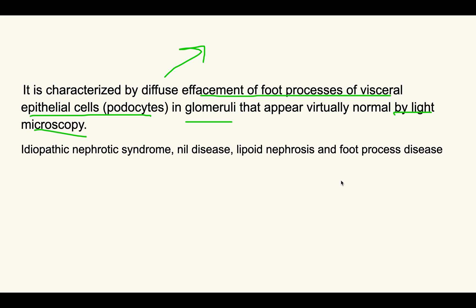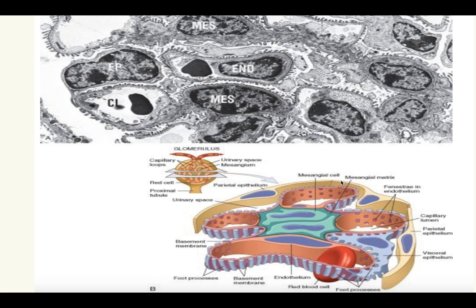There are some other names by which minimal change disease is known. It is also called idiopathic nephrotic syndrome because the actual pathogenesis is not clearly known. It is also known as nil disease because no abnormality is seen on light microscopy. It is called lipoid nephrosis — the reason for which will be explained later — and also foot process disease, because there is effacement of the foot processes of the visceral epithelial cells.